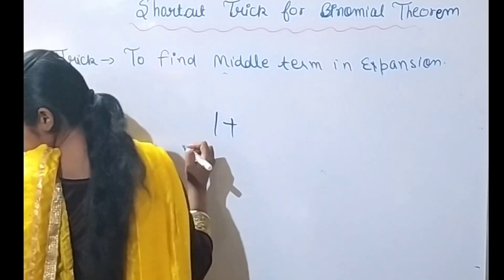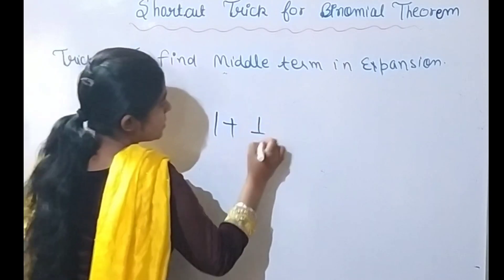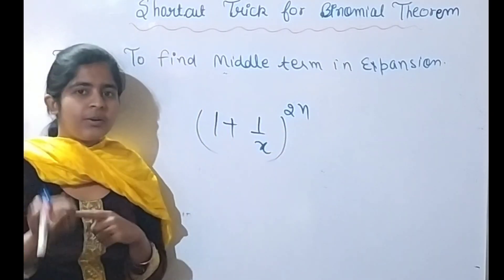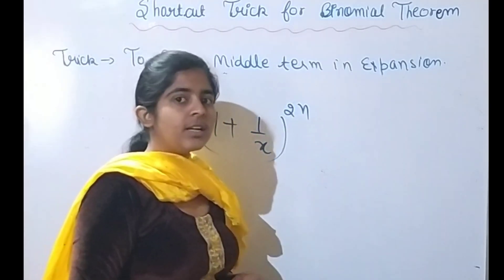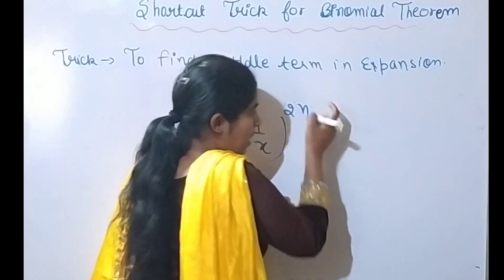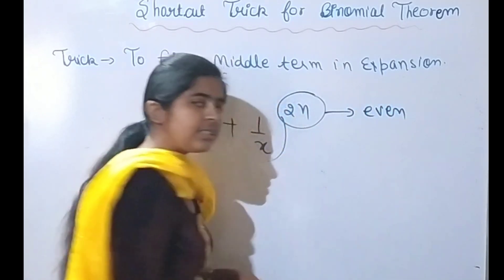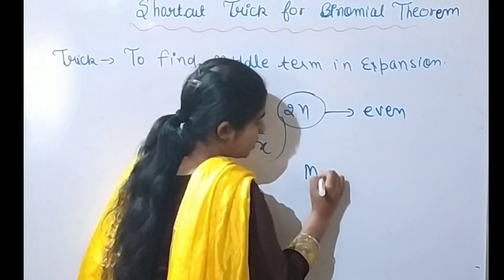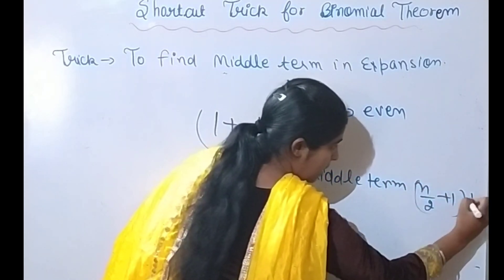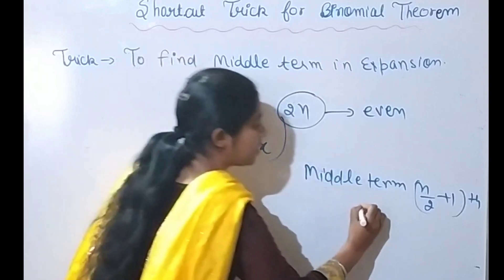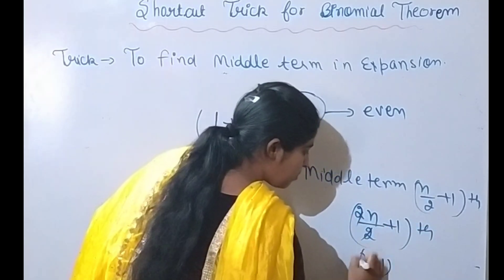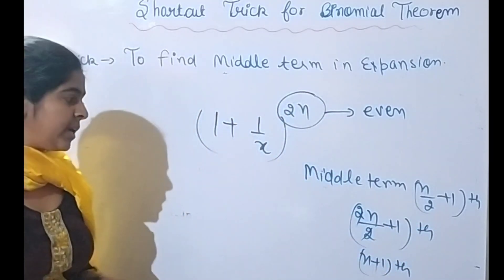Now a slightly more difficult example: (1 + 1/x)^(2n). The power here is 2n. Since the power is 2n, which is always even, the middle term is T(2n/2 + 1). The 2 and 2 cancel, giving T(n + 1). So the (n + 1)th term is the middle term.